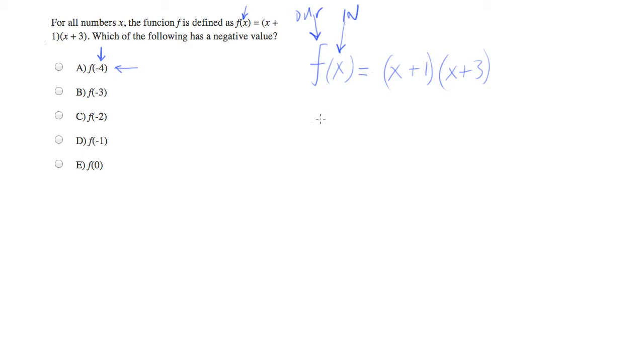When that happens, you can simply swap out all the x's for negative 4's. And you can solve that. Negative 3 times negative 1 in this case, which will equal 3. So f of negative 4 is equal to 3.